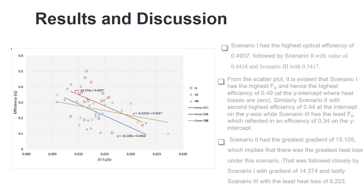For the scatter plot, it is evident that scenario 1 has the highest FR, which is the heat removal factor, and hence also depicted the highest optical efficiency. Similarly, scenario 2 with the second highest of 0.44 at the intercept on the y-axis, with scenario 3 with the least of 0.34.